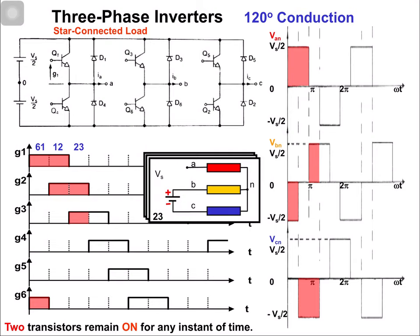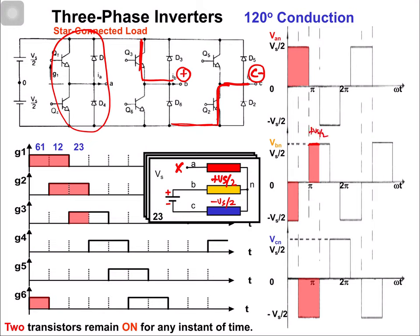In the next switching state 2 and 3: because of switch 2, phase C is connected with the negative terminal. Because of switch 3, phase B is connected with the positive terminal. Phase A is in the floating state — no switch is on for that arm. The equivalent circuit has phases B and C connected to the source, phase A open. Therefore, vbn = +Vs/2, vcn = -Vs/2, and van = 0.